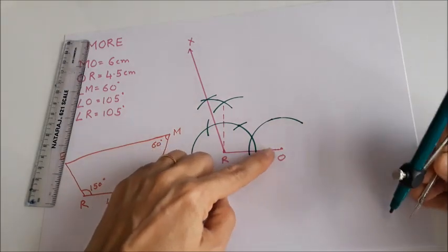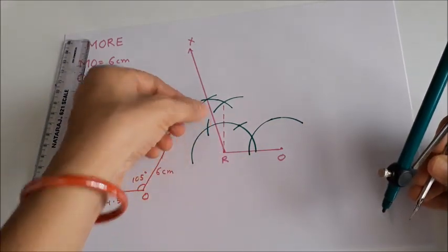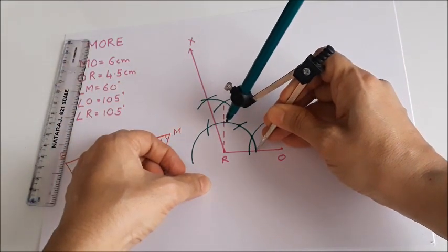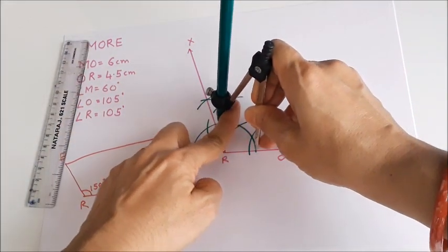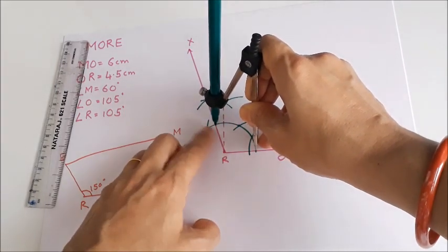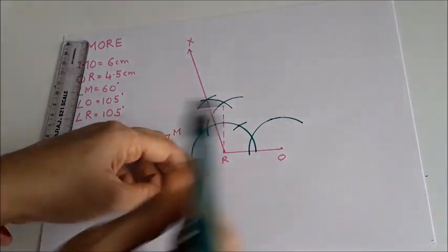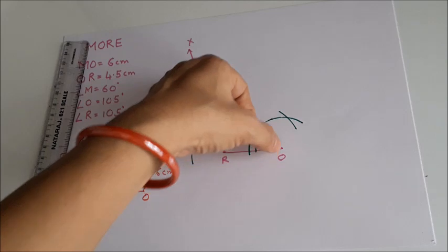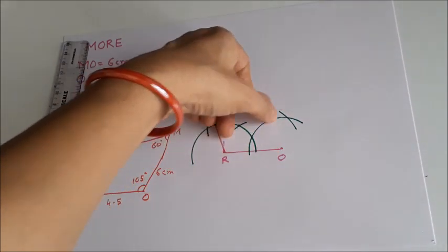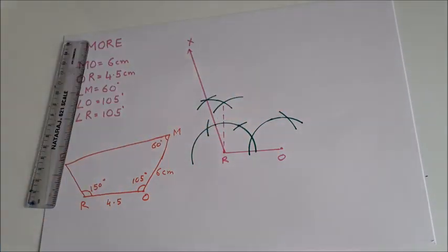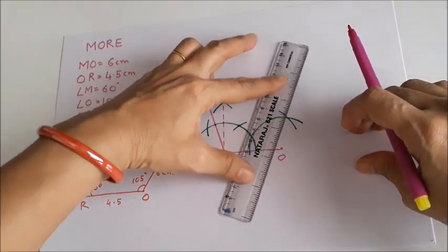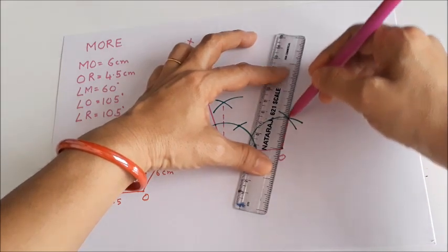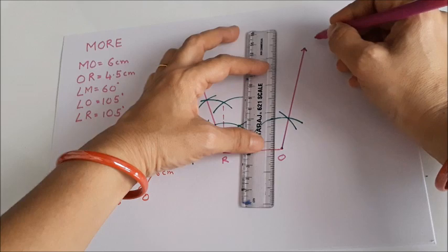My angle of 105 degrees spans from here to here. I take that radius, measure between those two points representing 105 degrees, and from O draw the arc. Then I join to get a congruent angle of 105 degrees. So O is connected here, and this ray you can take as Y.